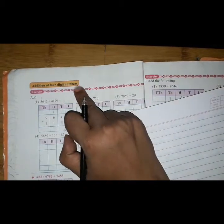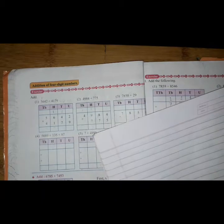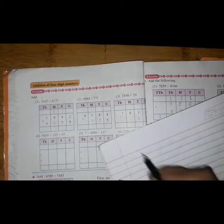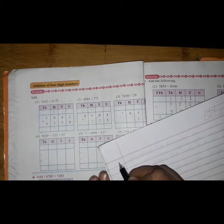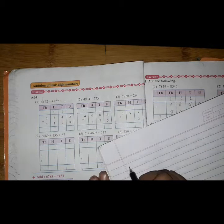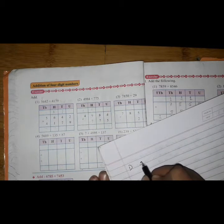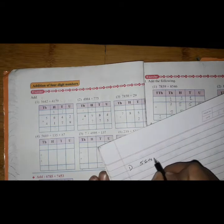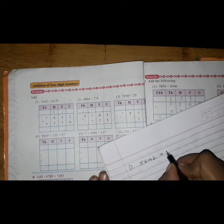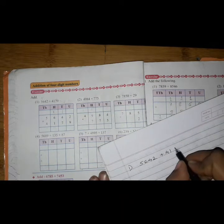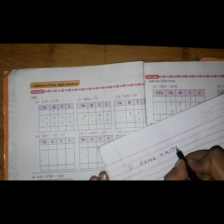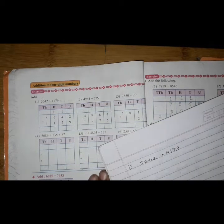Let's take the first example: 5,642 plus 4,179. Now let's write it vertically.